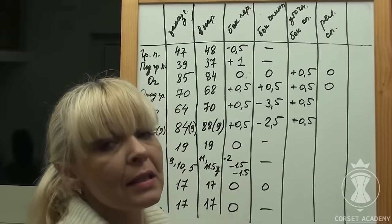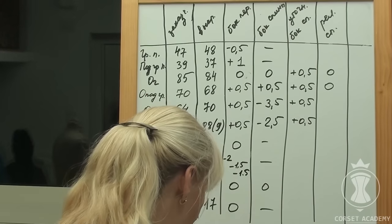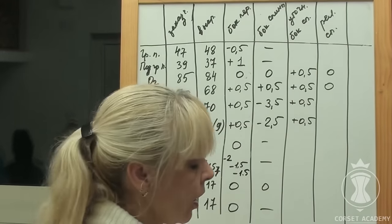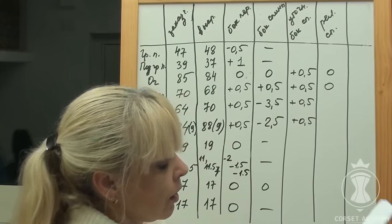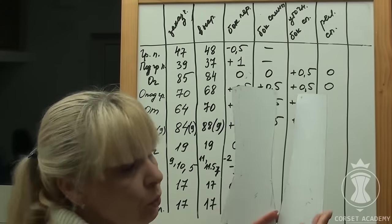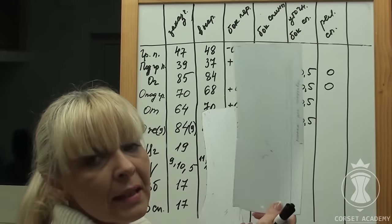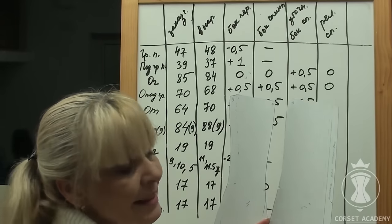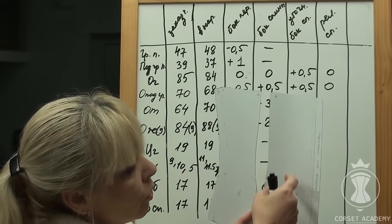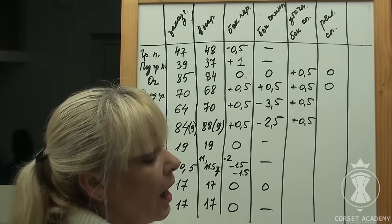Let us move on to our calculations related to the princess seams at the back. They should be recorded in column 7. Everything is just fine at the bust and underbust levels. There are no changes in the princess seams, and I write zeros there. We are left with the waistline and stomach levels. Let me make a short digression. When I was working on the pattern of our future corset, I thought I'd most likely make two princess seams at the back.